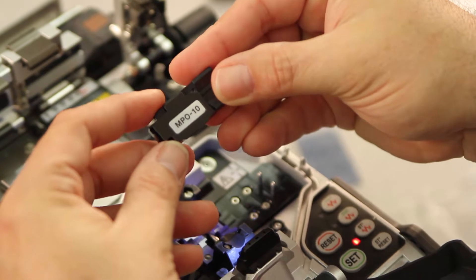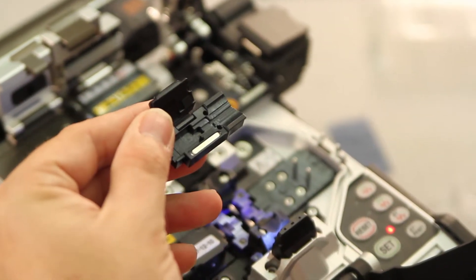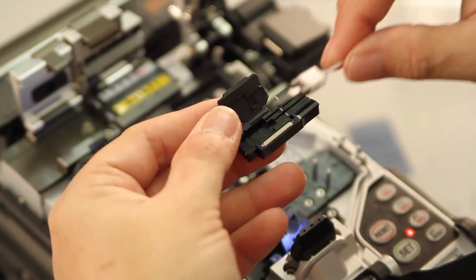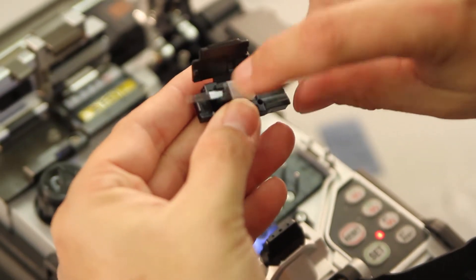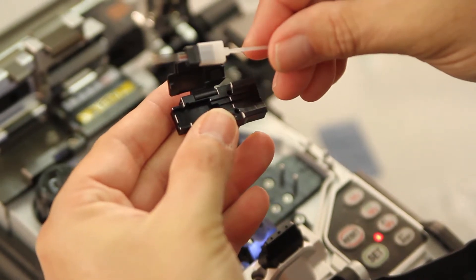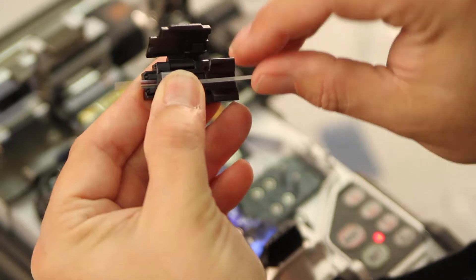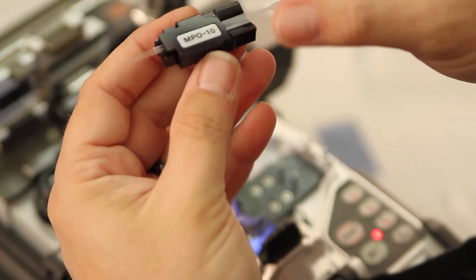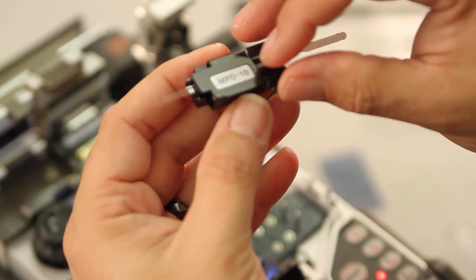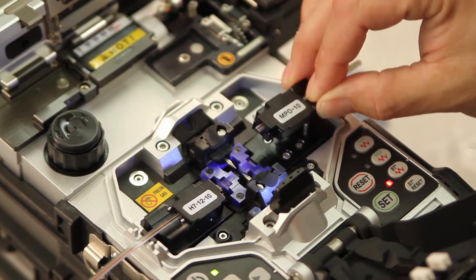With your MPO 10 connector holder, open your door. Take your connector, insert into the connector holder, closing your door. Your door should easily close. If not, open your holder and readjust your connector. Place within your splicer.